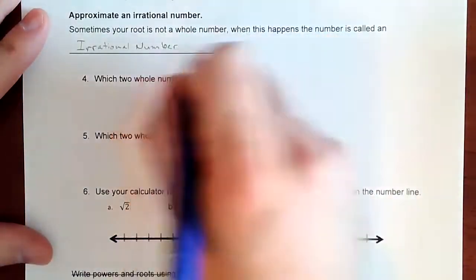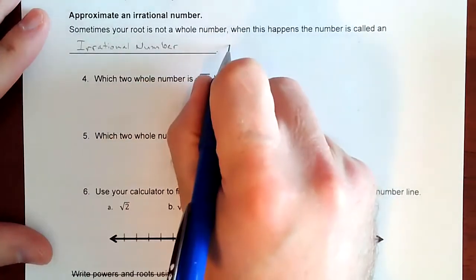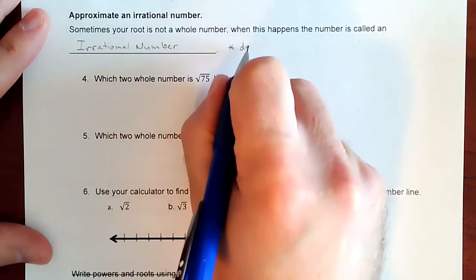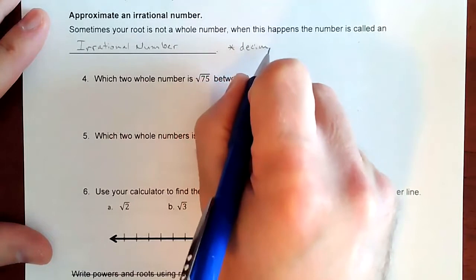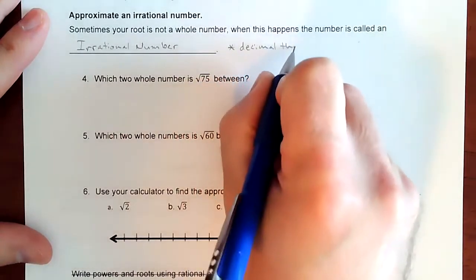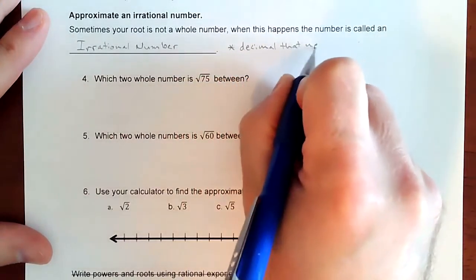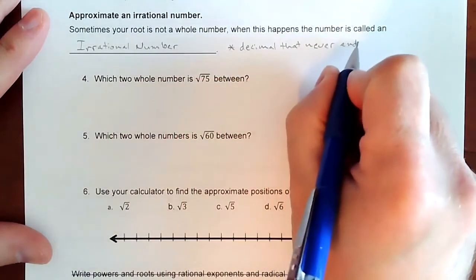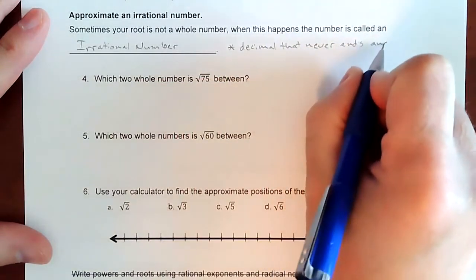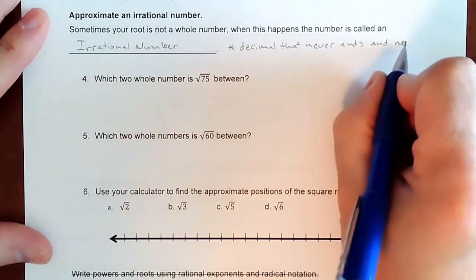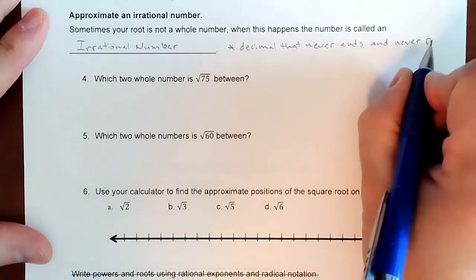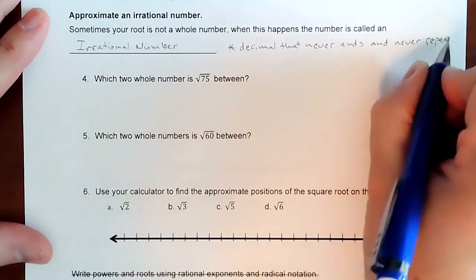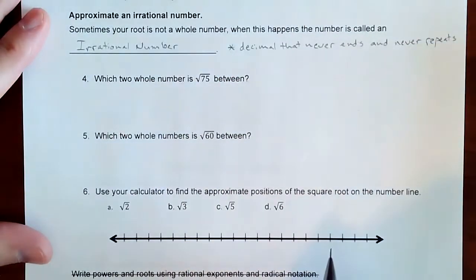So an irrational number is specifically a decimal that never ends and never repeats.